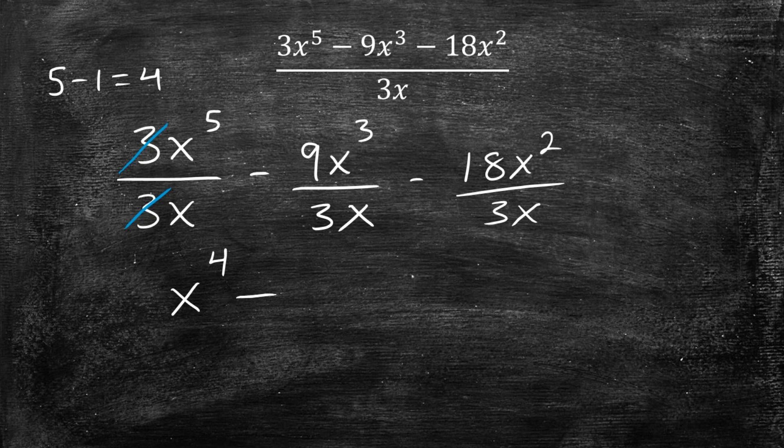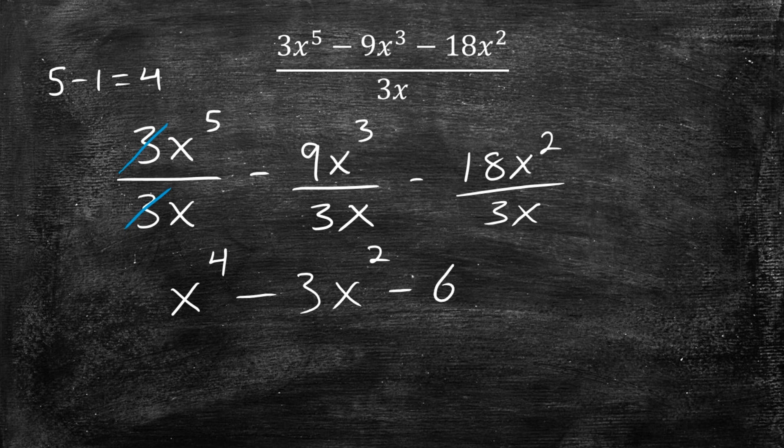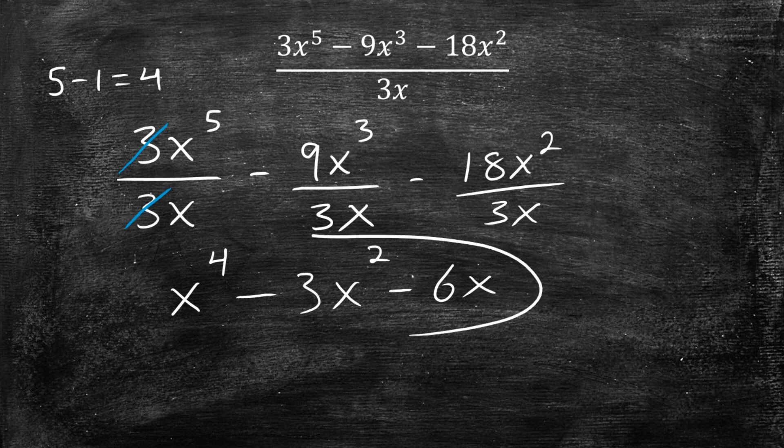Now let's keep going. Negative 9 divided by 3 is negative 3, and then it's going to be x squared, minus 18 divided by 3 is 6, and then it's going to be x there. So this is the final answer to this problem and this example is complete.